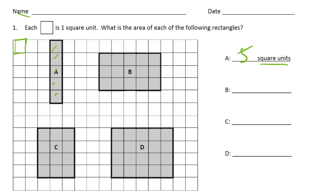B is one, two, three, four, five. It's three rows of five. That's 15 square units.